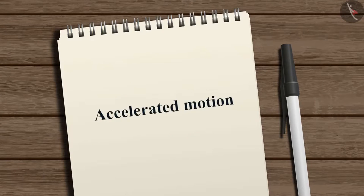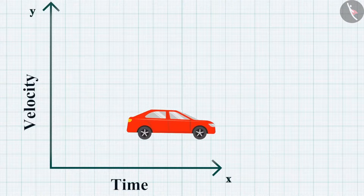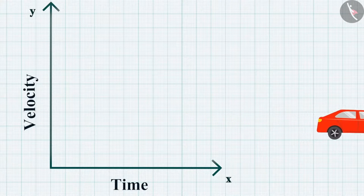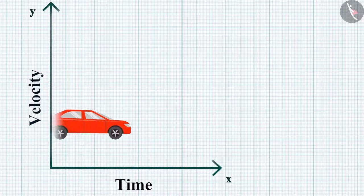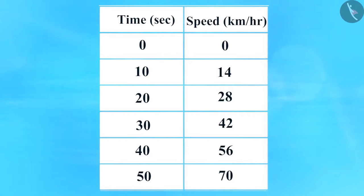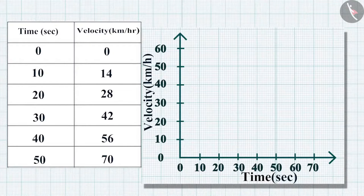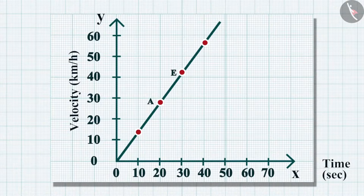Now, let us consider the accelerated motion. Let's first discuss the effect of uniform acceleration on the velocity-time graph. In uniform accelerated motion, velocity changes by equal amounts in equal time intervals. Let's suppose the train driver records the velocity of the train starting from rest at each 10-second interval. Can you plot the velocity-time graph of this data? It should look like this. For uniformly accelerated motion, the velocity-time graph is again a straight line.